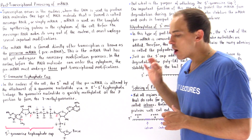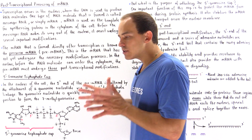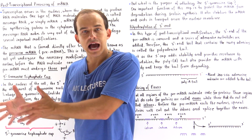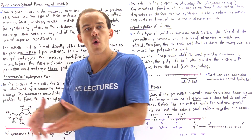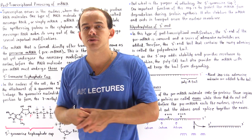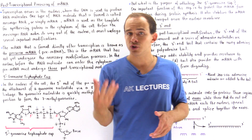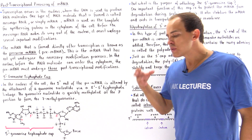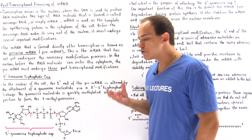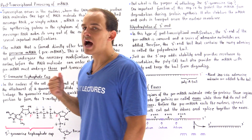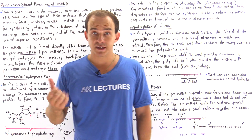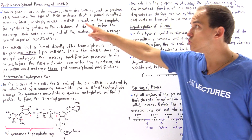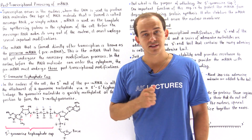Before our messenger RNA actually leaves the nucleus and enters the cytoplasm — where it attaches to the ribosomes and undergoes protein synthesis — our messenger RNA has to undergo several important types of modifications, several important types of post-transcriptional processes.